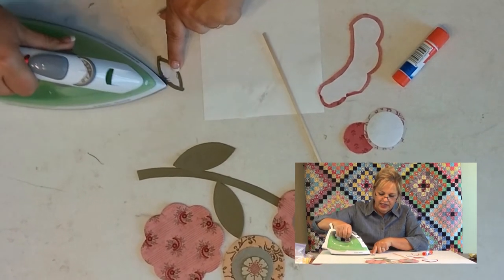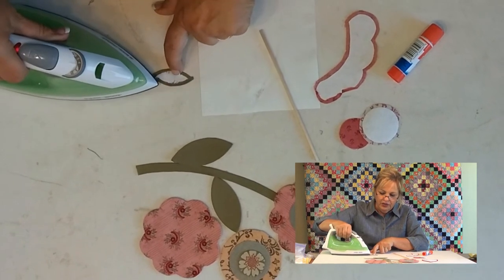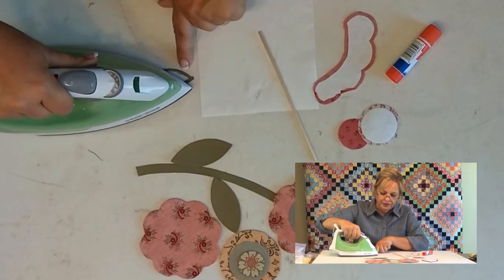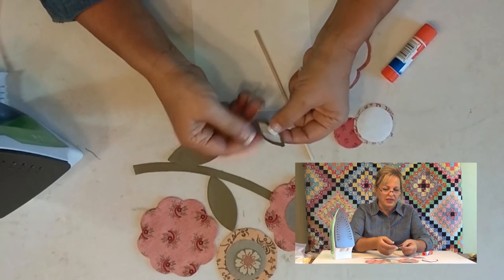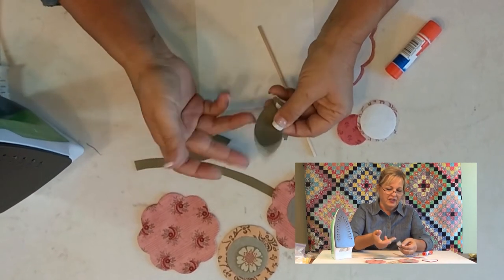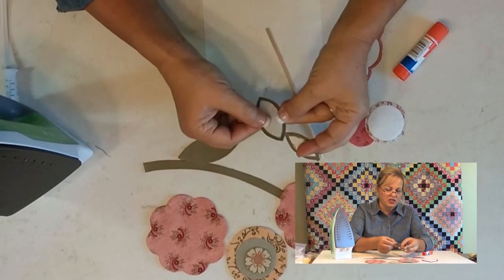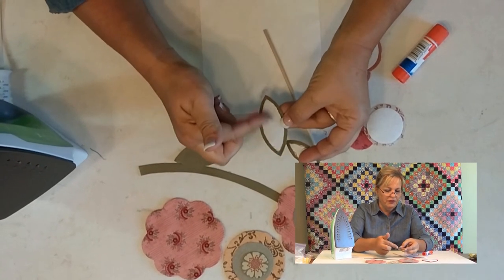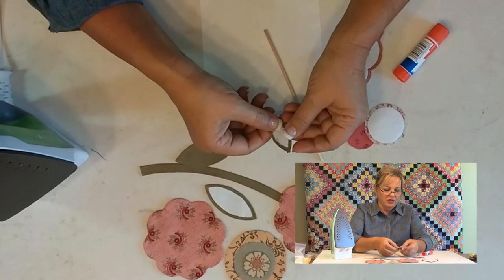Now the reason that we're heat setting is that it does two things. It is drying the glue. And the other thing that it does is it also crisps up this stabilizer. And so you have a really nice, easy piece to work with. Unlike when freezer paper is under here, it's really, really wobbly and hard to deal with.